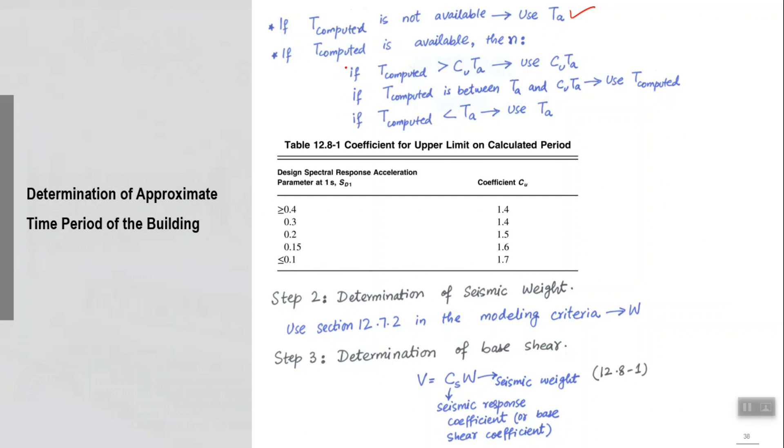If you have that T computed with you, then there can be three possibilities. One is that your T computed is greater than the upper limit—then use that upper limit. If your T computed is between the approximate empirical time period and the upper limit, then use the T computed. And then if your T computed is already less than Ta, then use Ta.